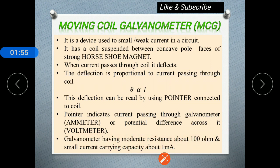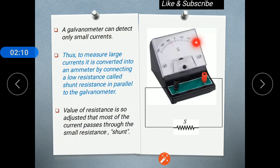A galvanometer has very small or moderate resistance of about 100 ohms and a small current carrying capacity of about 1 mA. As the galvanometer has very small current capacity, we cannot use it to measure larger currents such as 1 mA, 10 mA — we cannot use the galvanometer directly.